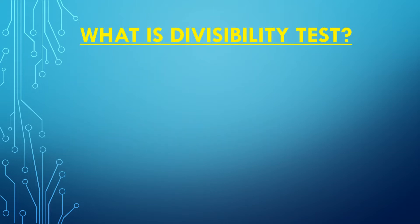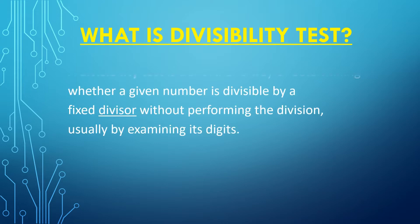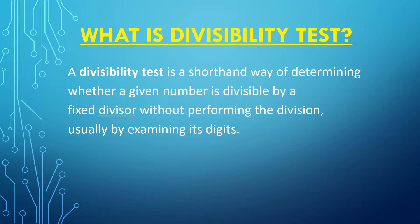What is a Divisibility Test? A Divisibility Test is a shorthand way of determining whether a given number is divisible by a fixed divisor without performing the division, usually by examining its digits. For example, we will see how to examine the number by its digits.